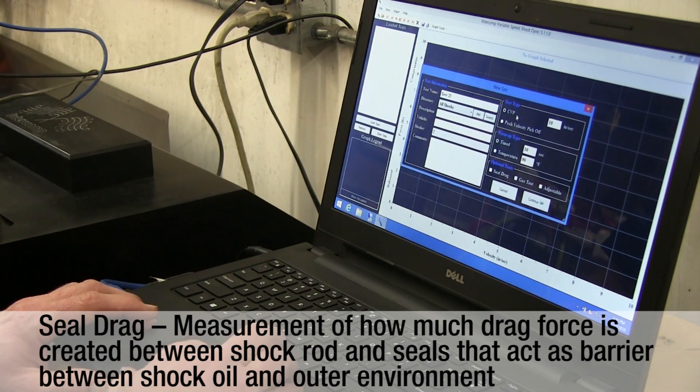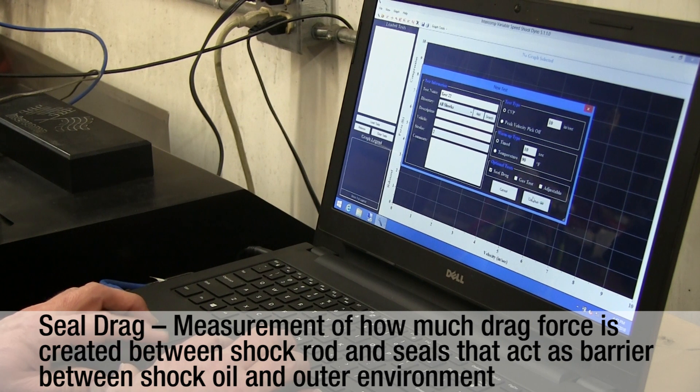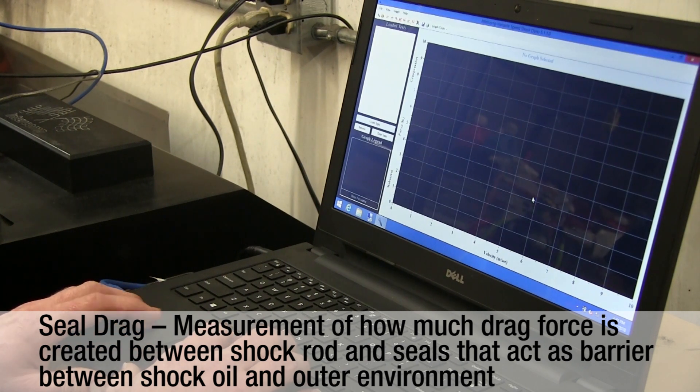I'm going to do a 10 inch CVP here. This time I'm going to click on the seal drag option. That's a nice option to check the seal drag on a shock after you've done some sort of modifying to it or rebuilding.